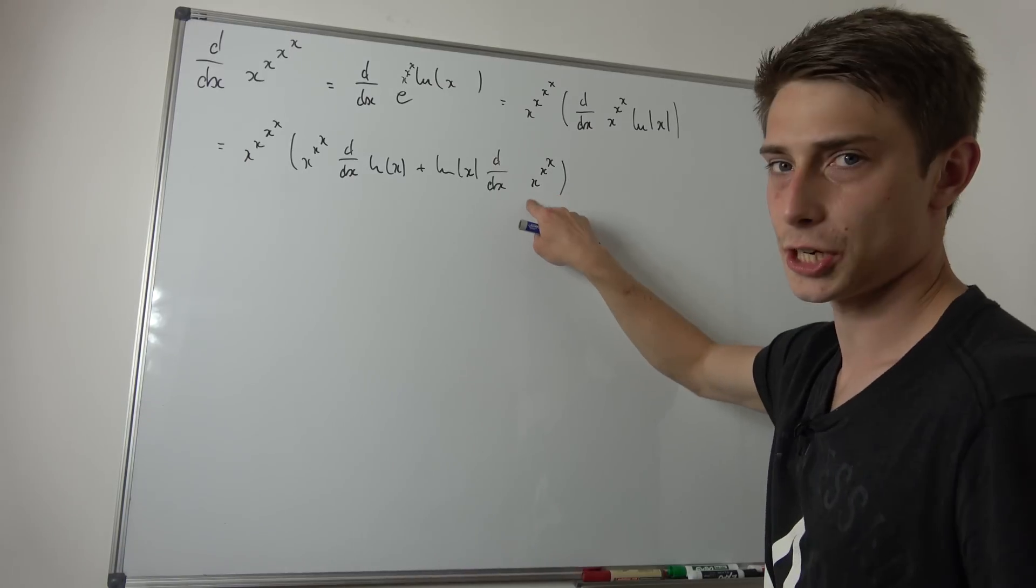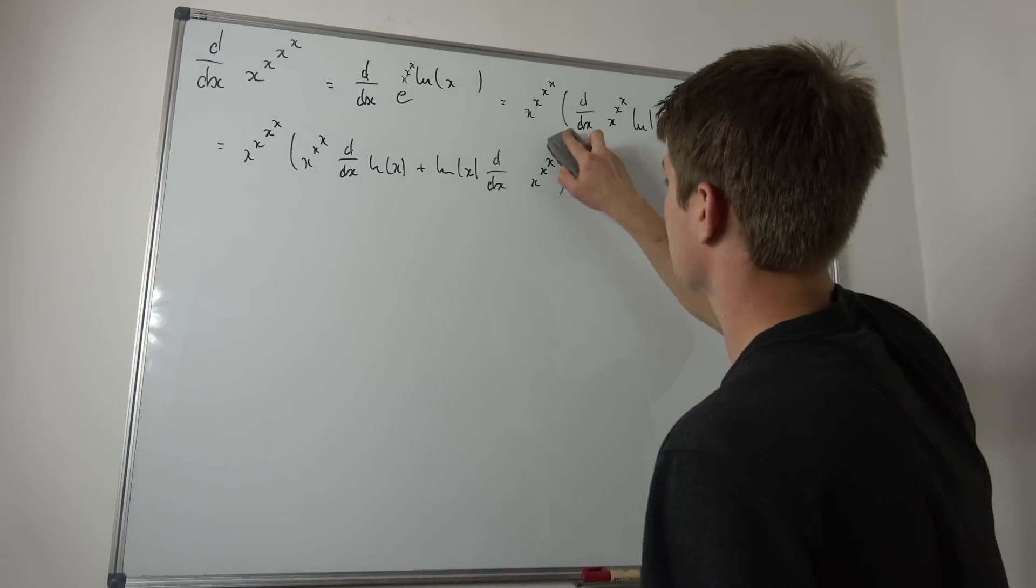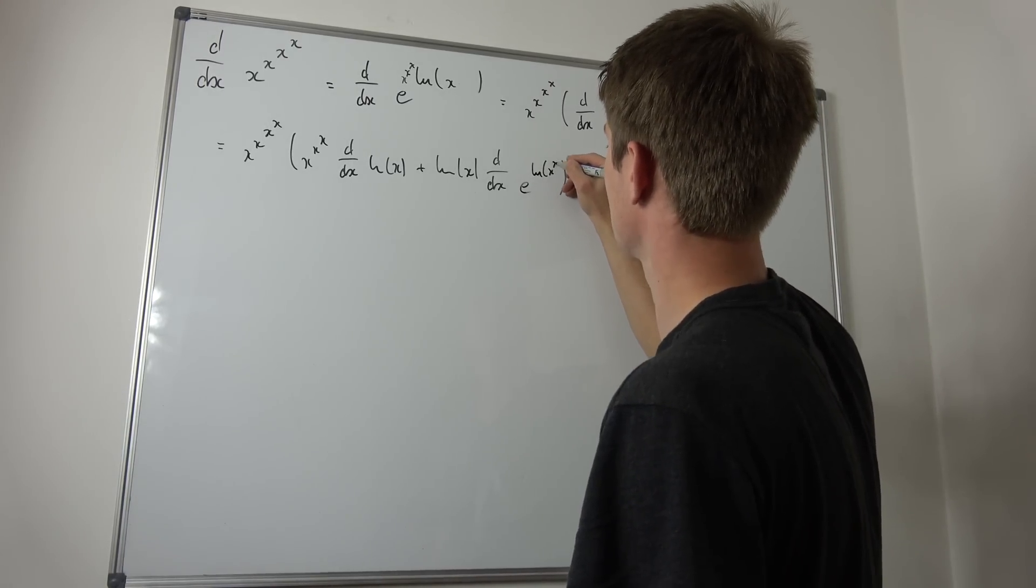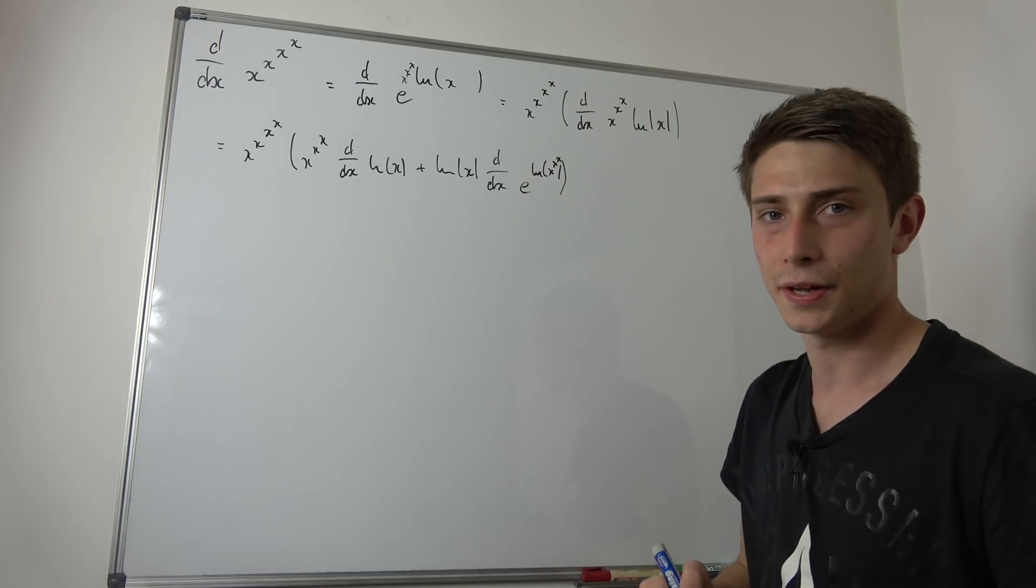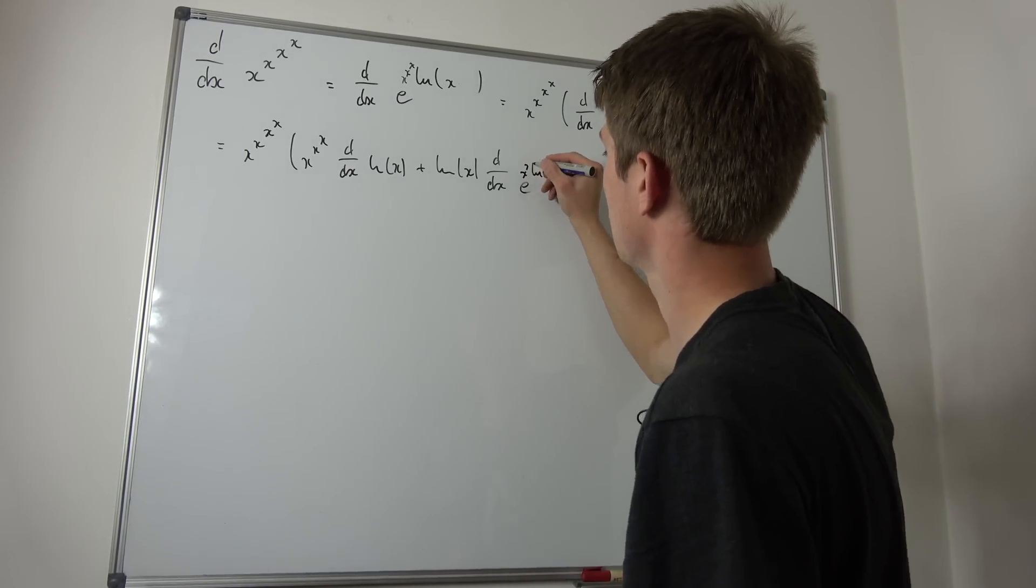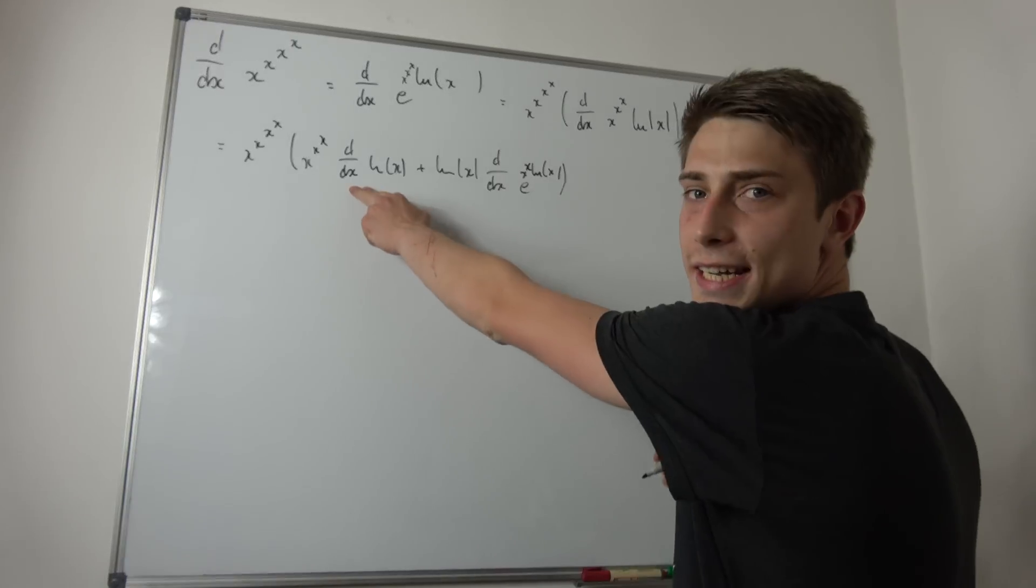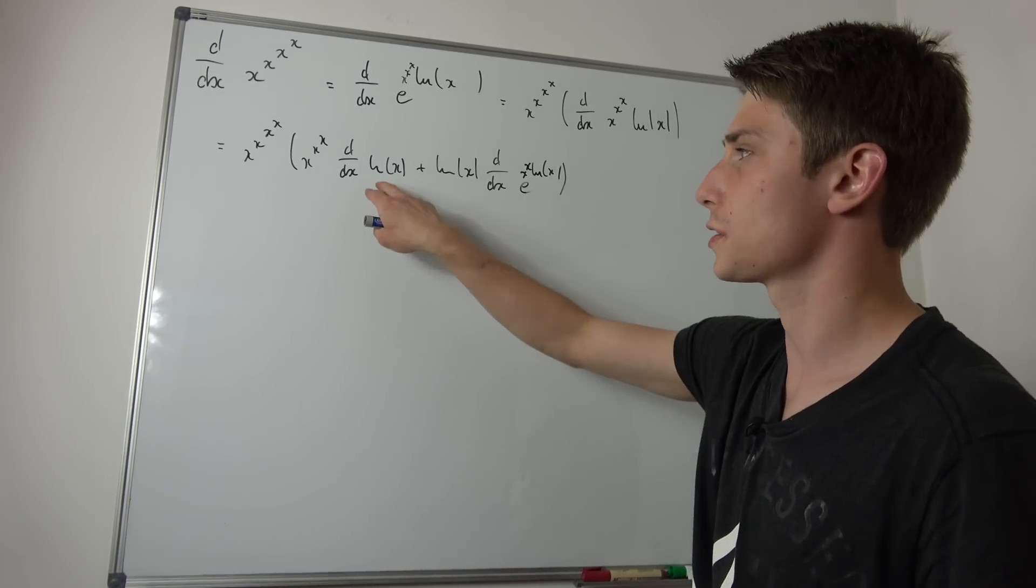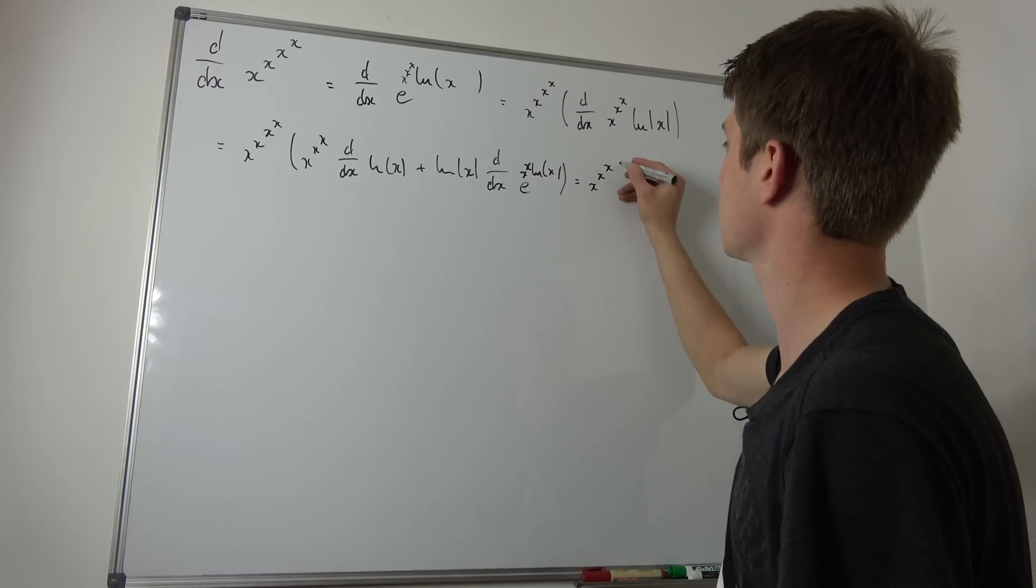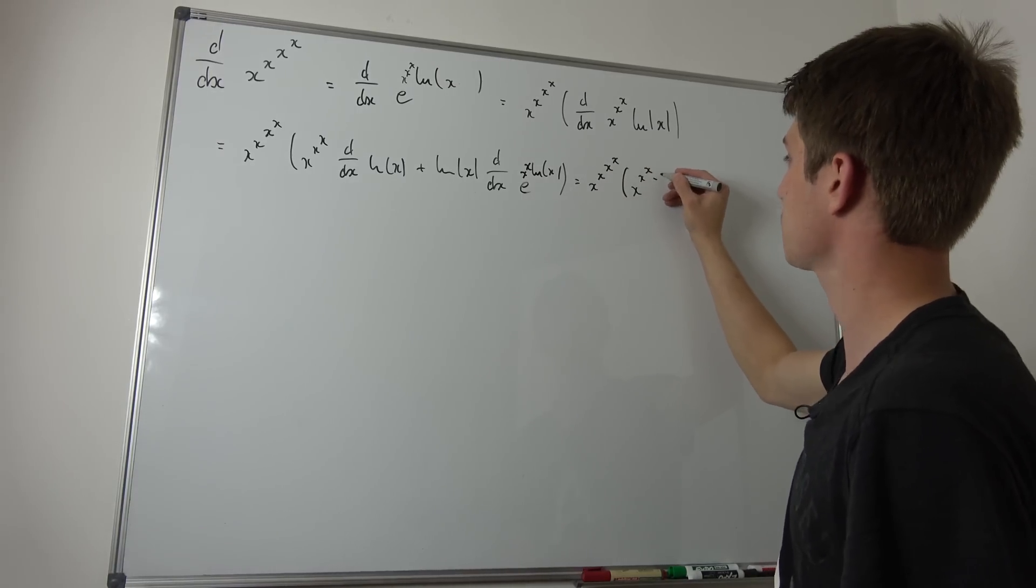And then plus, adding the second term, we have the natural log of x and then d/dx of x^x. Great. And now we can use the same procedure here just like before. So x^x is nothing but e^(ln(x^x)). But now we can use the logarithm rules to bring this exponent to the outside. That's a mess. Okay, great.